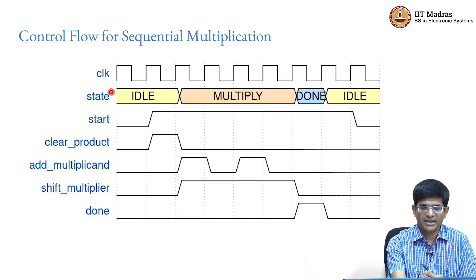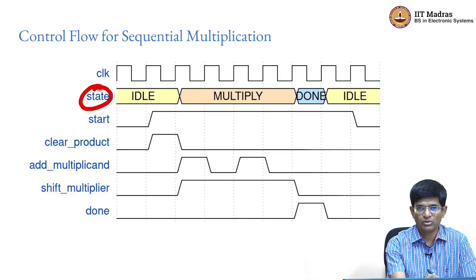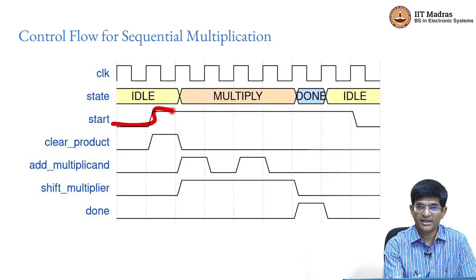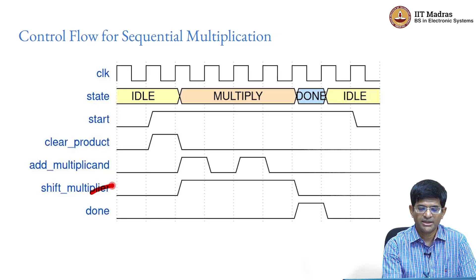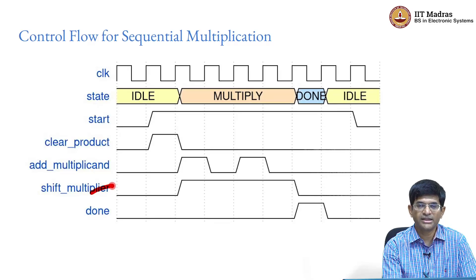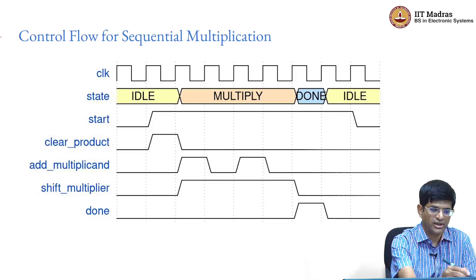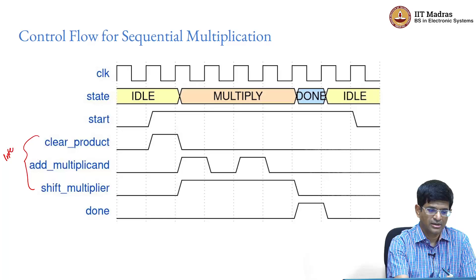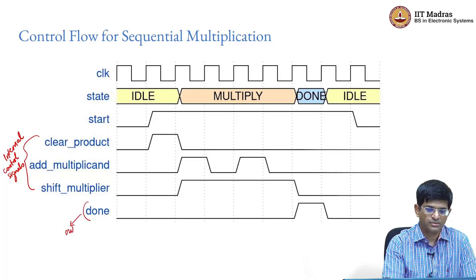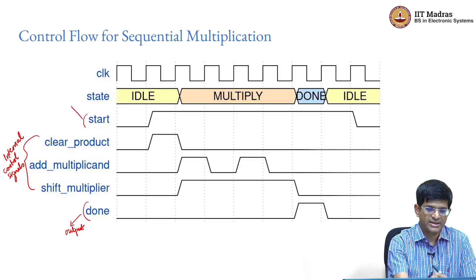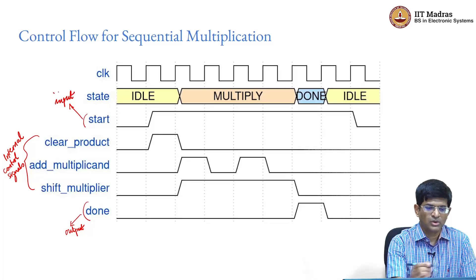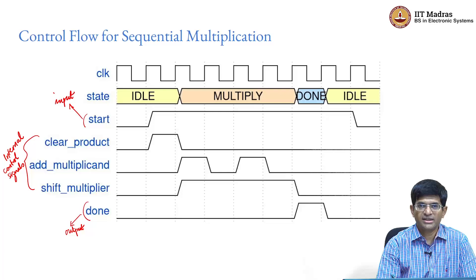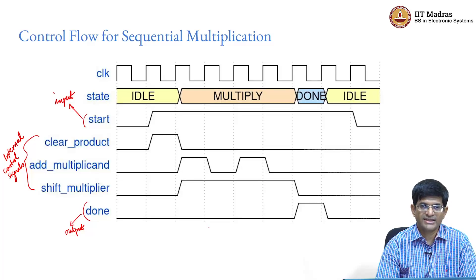If you look carefully at this, you will realize that state is an internal state corresponding to whatever FSM I am designing. Start is an external input which tells me when to perform my computation. Clear product, add multiplicand, shift multiplier are all internal control signals, and done is an output whereas start is an input of the system. With this in mind it is very clear that this is talking about the finite state machine.